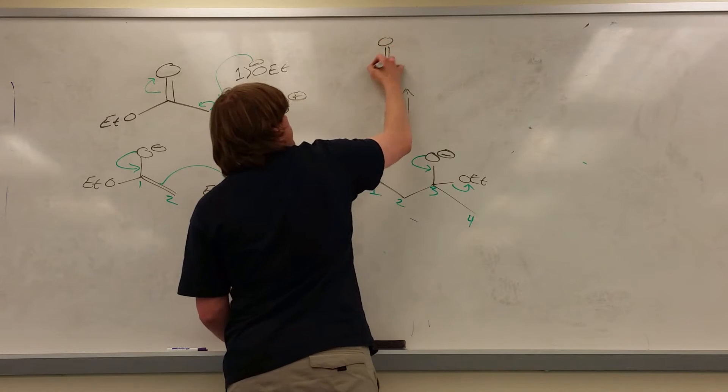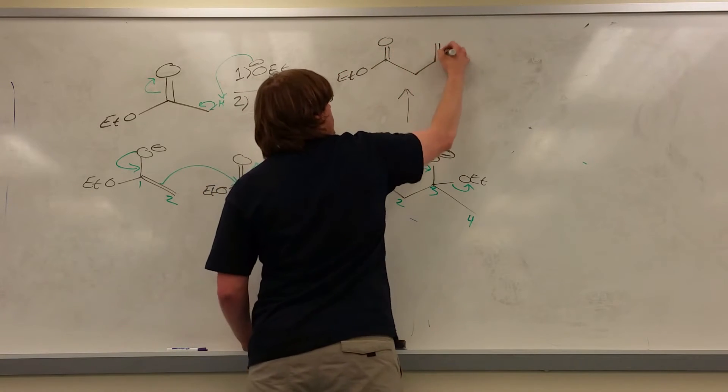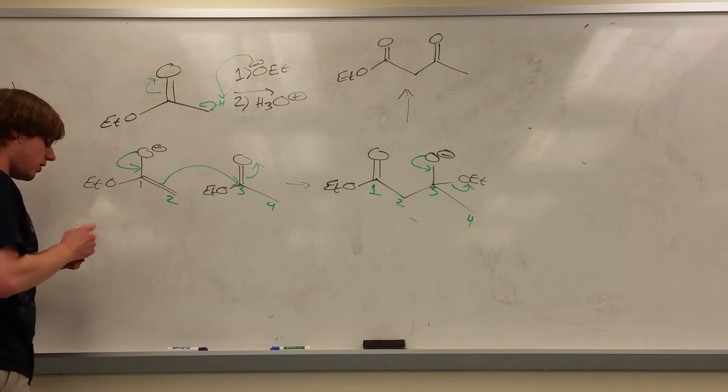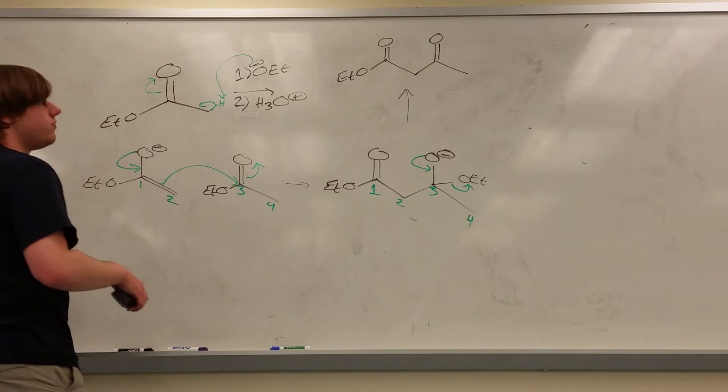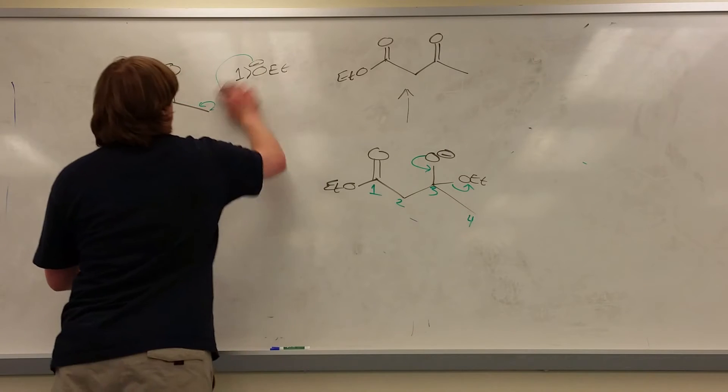A one ester, OET, and one carbonyl, one ketone. That would be your final product. Now there's something else we can do that furthers this reaction. The Claisen is done, but the product we can still work with.